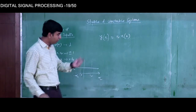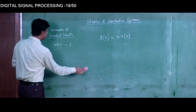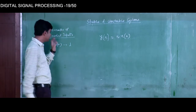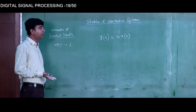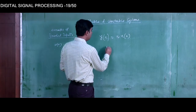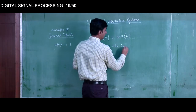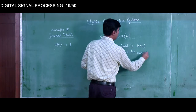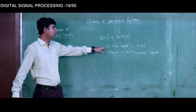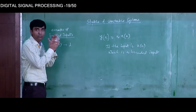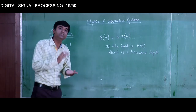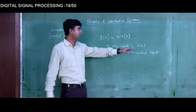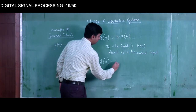Now, for this example, let us take the unit step function u[n] as the bounded input. The unit step has value +1 for n greater than or equal to 0, and 0 for n less than 0 — so it is a finite signal from minus infinity to infinity, making it a valid bounded input. With this input, the output becomes y[n] = n·u[n].